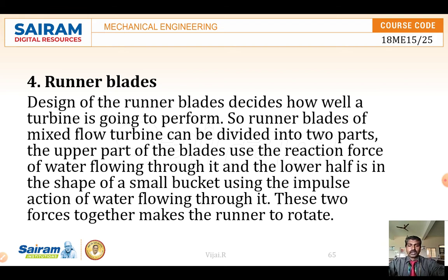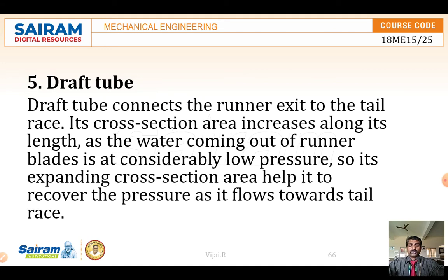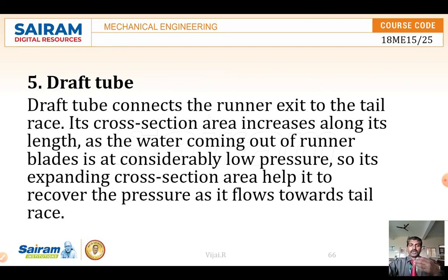These two mechanisms — reaction and impulse — are used for the runner to rotate. Next is the draft tube: after the runner extracts energy from the water, the water has to exit. The draft tube is connected to the runner exit, also called the tailrace, and its cross-sectional area increases along the length. While the spiral casing decreases in cross-section going in, the draft tube gradually increases in cross-section going out. Since water exits the runner blades at low pressure, the expanding pipe reduces pressure further, helping to recover pressure towards the tailrace.